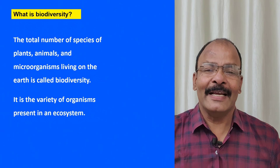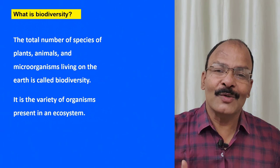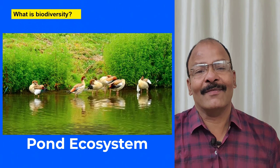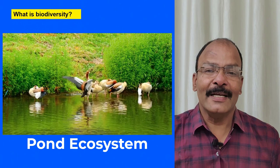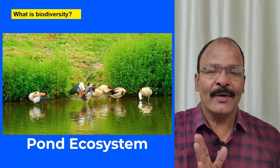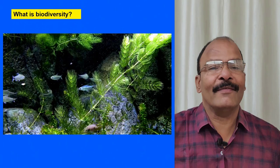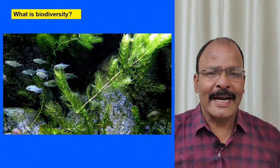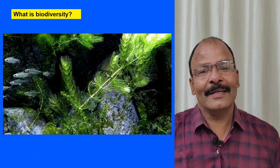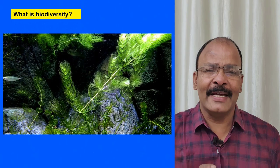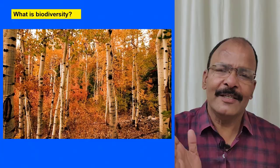Biodiversity is the variety of organisms present in an ecosystem. An ecosystem can be a forest ecosystem or a pond ecosystem. A pond has living as well as non-living components — living factors include fish, tadpoles, and frogs; non-living factors include water, temperature, and light. These continuously interact with each other to form one ecosystem.